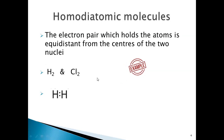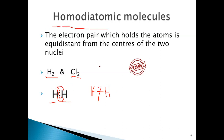For homo diatomic molecules, for example, if we take H2 — hydrogen — there are two atoms sharing a single electron pair, that means two electrons shared by means of a single covalent bond. This pair of electrons is equidistant from the two atoms — they are at the same distance from both nuclei.